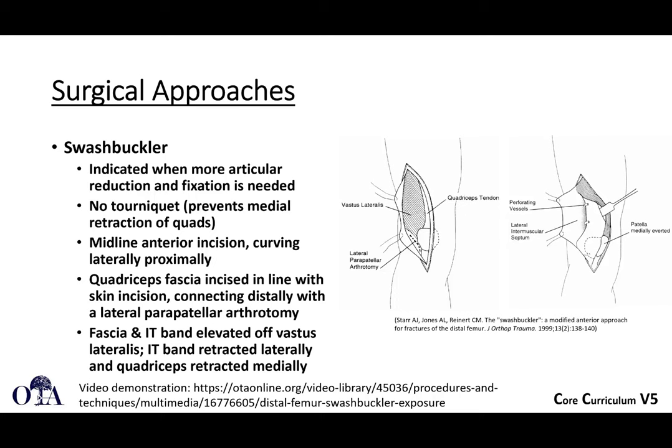You divide the iliotibial band, incise the vastus lateralis fascia, elevate the muscle from distal to proximal anteriorly, and ligate the perforating vessels. For more articular exposure, bring the incision more anteriorly with a lateral parapatellar arthrotomy, which is very commonly done for exposure of the joint and extensile proximal exposure.